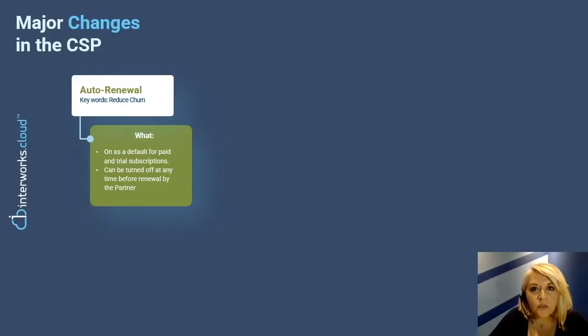A very important issue that you should also pay attention to is the auto-renewal option that comes ON as a default for every subscription. Of course, it can be turned off by the partner at any time before renewal, but it's good to know that this feature will help you reduce customer churn. But on the other hand, you should be mindful when it comes to annual and triennial subscriptions because they will be auto-renewed.